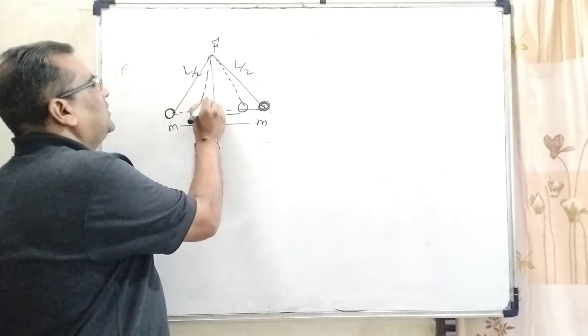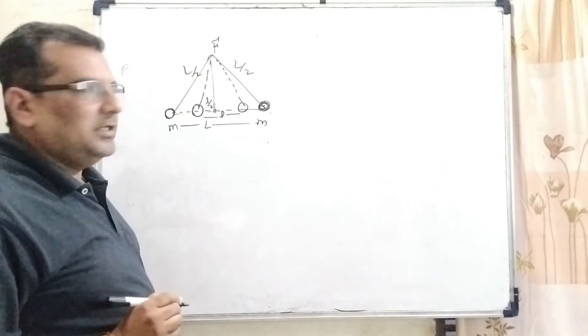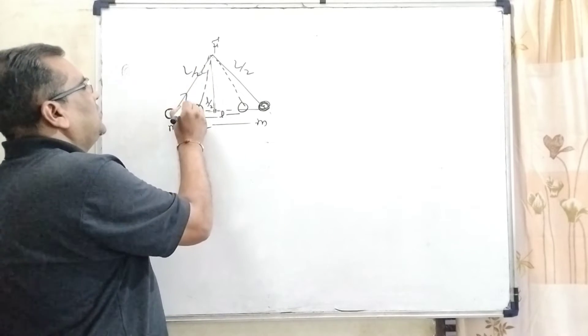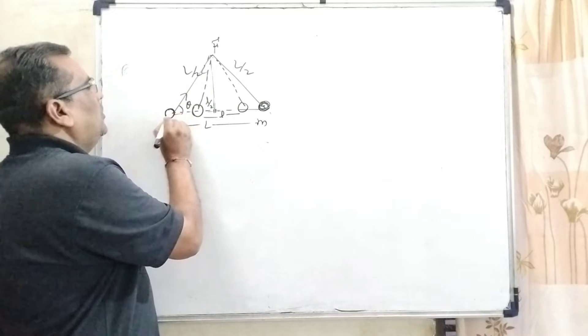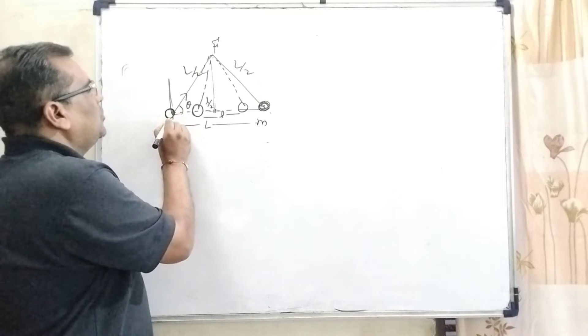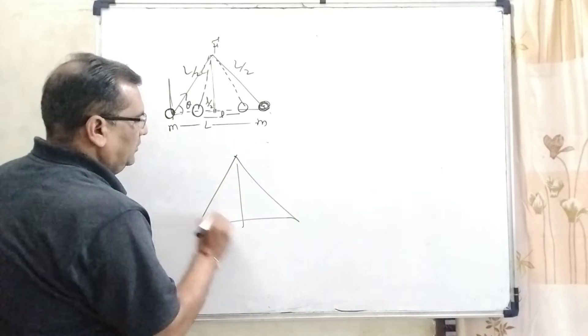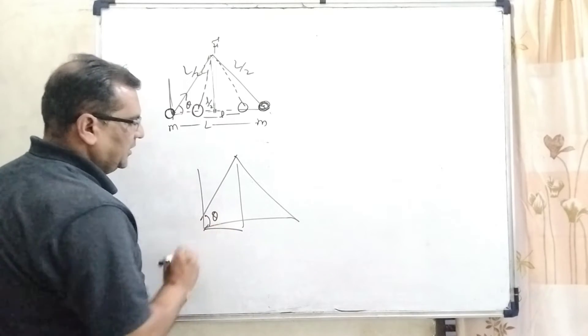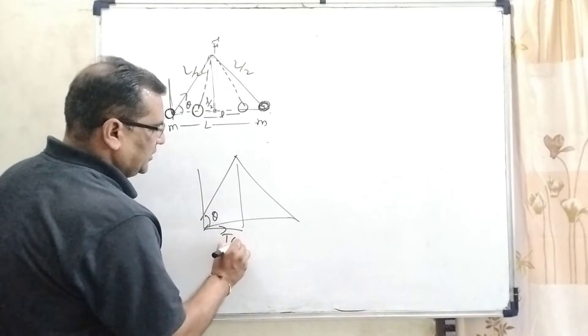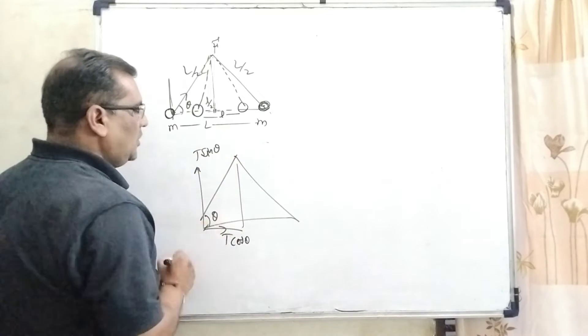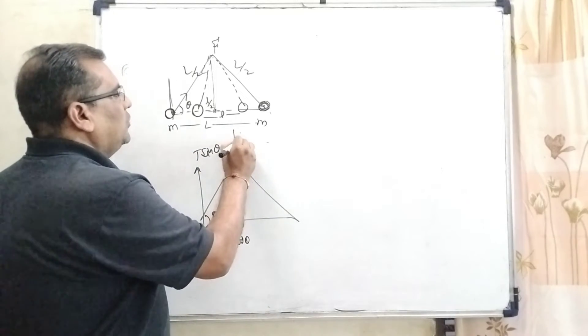So exactly at midpoint, the distance becomes l by 2. Is it clear? So here tension is applied. Let us consider this angle is theta. So resolving two components, we have to draw them separately. Let us consider theta. So here, this is T cos theta, this is T cos theta, and this is T sin theta. And this is the force.